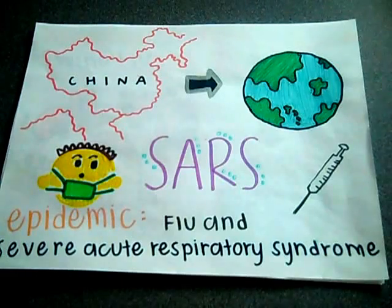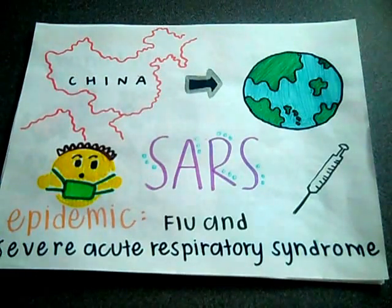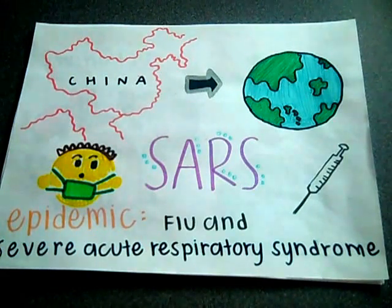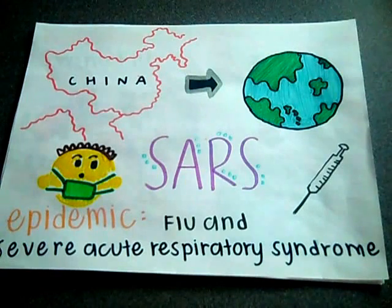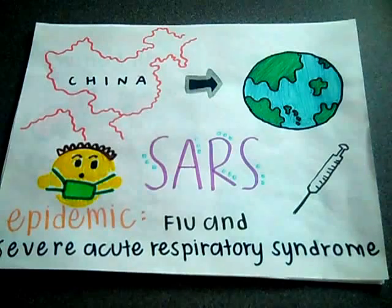The 2012-2013 season influenza in the United States would be another example of an epidemic. Occurrences were increasing through November and December, until they peaked around late December. 12,337 people were hospitalized, and there were a total of 149 deaths.